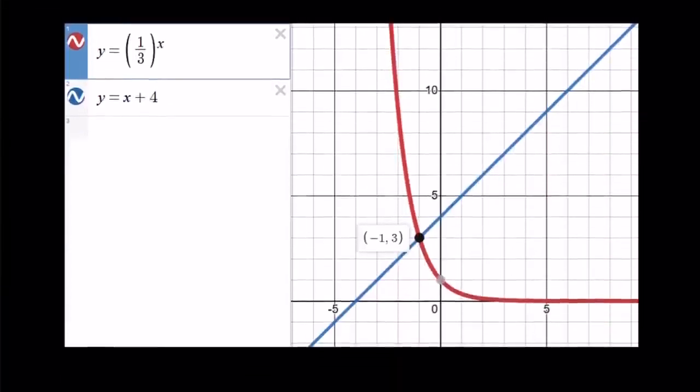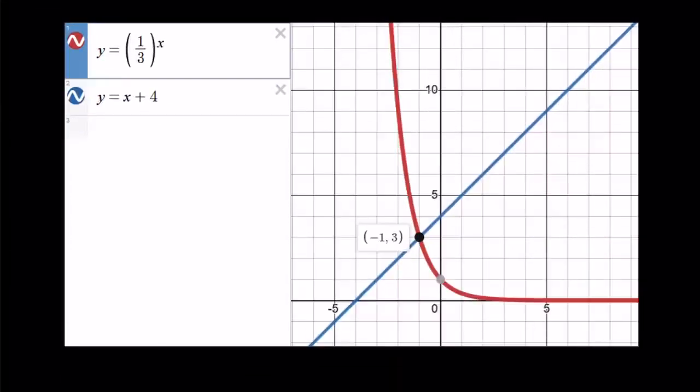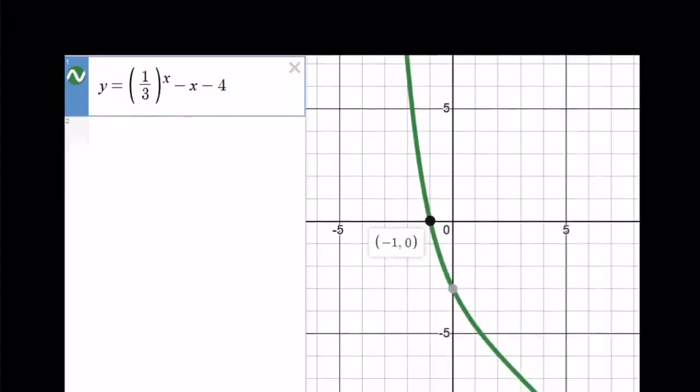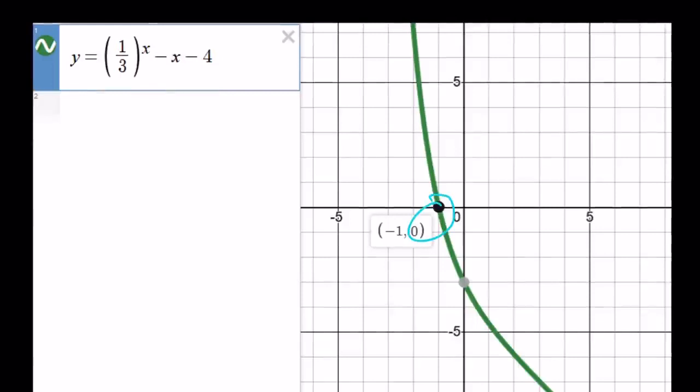Now, let's go ahead and take a look at the two different graphs here. One of them is the first approach. Notice that negative 1, 3 is clearly an intersection point. And then, the second approach gives you the following function, whose derivative is always negative, which means it's always decreasing. And this is going to be our solution.